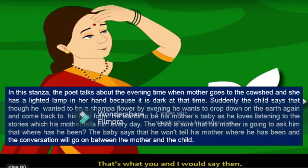In this stanza, the poet talks about the evening time when the mother goes to the cow shed and she has a lighted lamp in her hand because it is dark at that time. Suddenly, the child says that though he wanted to be a Champa flower, by evening he wants to drop down on the earth again and come back to his own form.